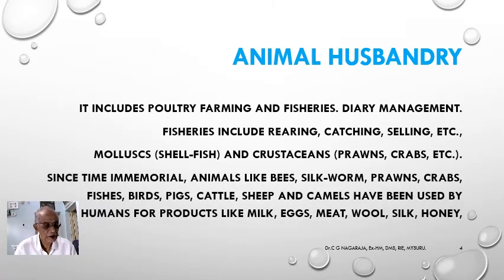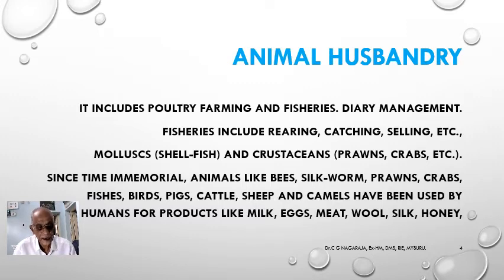Animal husbandry also includes poultry farming, fisheries, and dairy management. Fisheries include rearing, catching, and selling of fish, as well as shell animals like mollusks and crustaceans like prawns and crabs, which have been taken by human beings as delicacies.